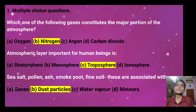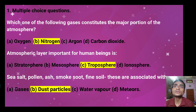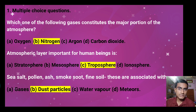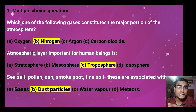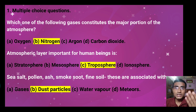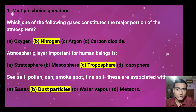Now a multiple choice question: which of the following gases constitutes the major portion of the atmosphere — oxygen, nitrogen, argon, or carbon dioxide? We have seen nitrogen is 78%, so that is obvious. The second MCQ: which atmospheric layer is most important for human beings? We have talked about biological activity, so this is why troposphere is the most important for us — because we live in the troposphere.